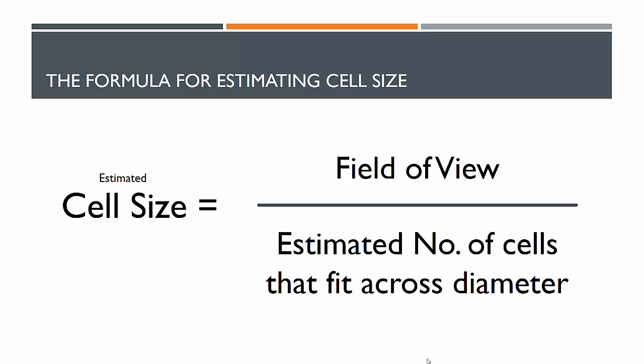Today, the big formula we need to remember is this one. I put estimated over here because technically, if you did this perfectly, cell size would equal the field of view divided by the number of cells that fit across the diameter. But life is never really that friendly to us, so we have to say it's an estimated cell size because we put some measure of error in here. So estimated cell size equals the field of view over estimated number of cells that fit across that diameter.